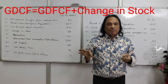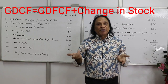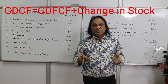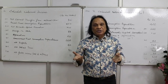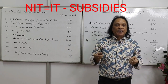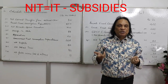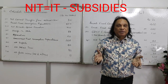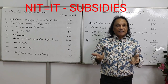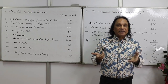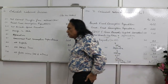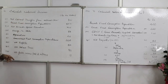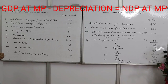To recap the full formula: private final consumption expenditure plus government final consumption expenditure plus gross investment (gross domestic capital formation = gross domestic fixed capital formation plus change in stock) plus net exports (exports minus imports) gives GDP at MP. Subtract depreciation to get NDP at MP. Subtract NIT to get NDP at factor cost (domestic income). Add NFIA to get NNP at factor cost, which is national income.